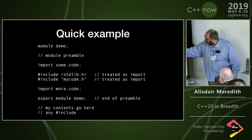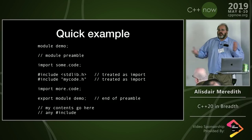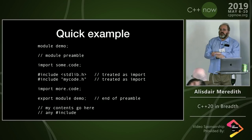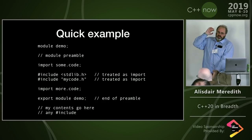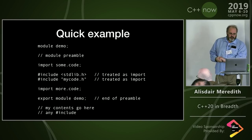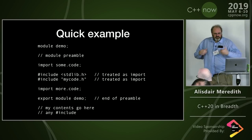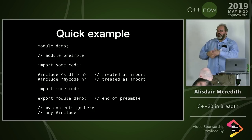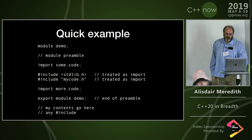The preamble ends when we get to 'export module demo;' — this does two things: it marks the end of the preamble and declares this as the interface unit for the module, defining what the module exports. That's about as far as I want to go here — there will be much more important and useful talks on modules elsewhere. Each of my seven pillars could easily fill several 90-minute talks.